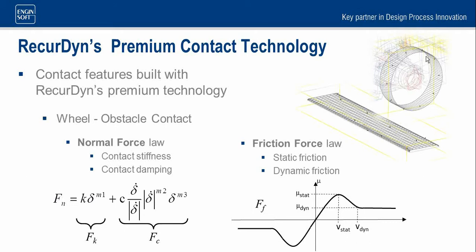It can simulate every kind of contact force between two bodies thanks to its complex formulation, including both contact thickness and contact damping. The friction forces are reproduced by applying the correct static and dynamic friction coefficients. This sophisticated contact is made extremely efficient by RecurDyn's smart contact management, so that we are able to simulate models with thousands of contact features. No other multibody software on the market can do the same.